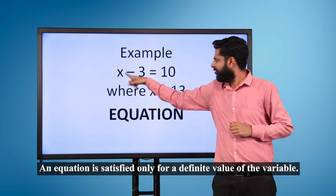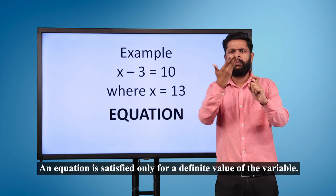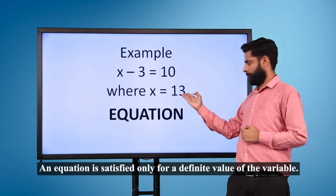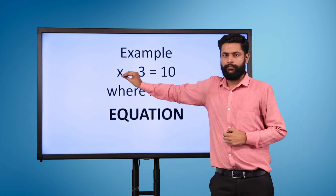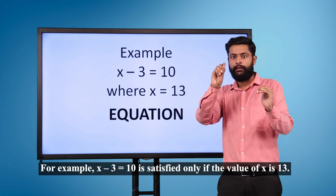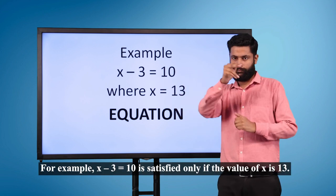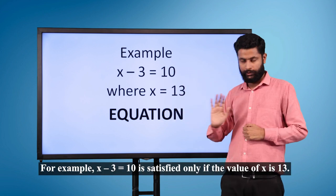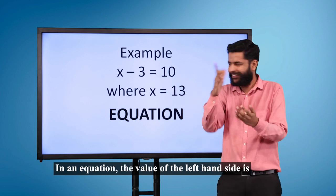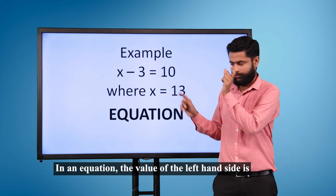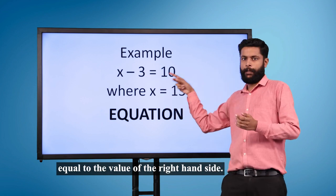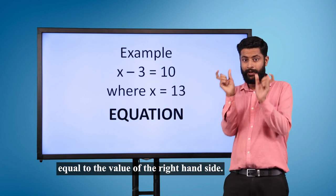An equation is satisfied only for a definite value of the variable. For example, x minus 3 is equal to 10 is satisfied only if the value of x is 13. In an equation, the value of the left-hand side is equal to the value of the right-hand side.